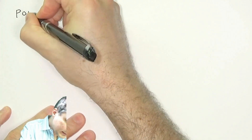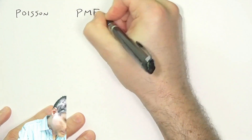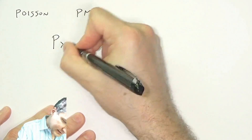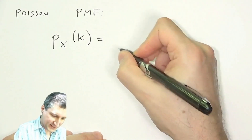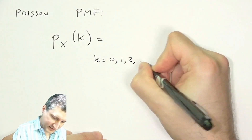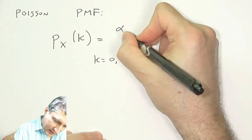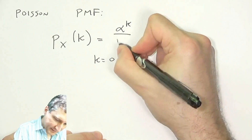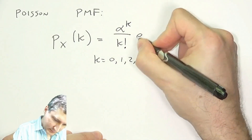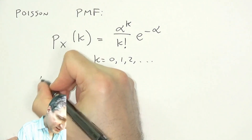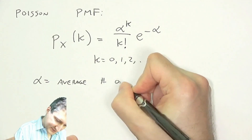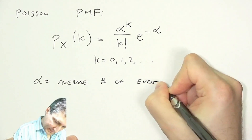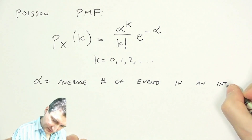The PMF for a Poisson random variable is the following. Here, k is the number of things that could happen in an interval. k is going to have the range zero, one, two, ... up to infinity. And it's parametrized by this number alpha, where alpha is the average number of events in some given interval.